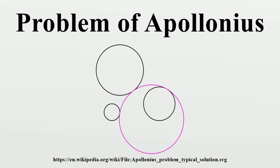In Euclidean plane geometry, Apollonius' problem is to construct circles that are tangent to three given circles in a plane. Apollonius of Perga posed and solved this famous problem in his work Pi Alpha Phi Alpha Iota.